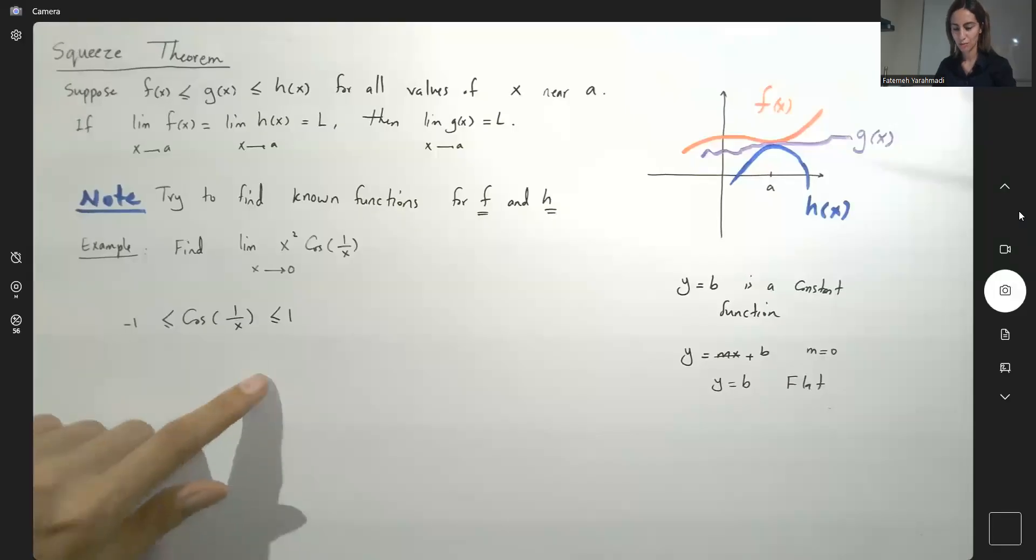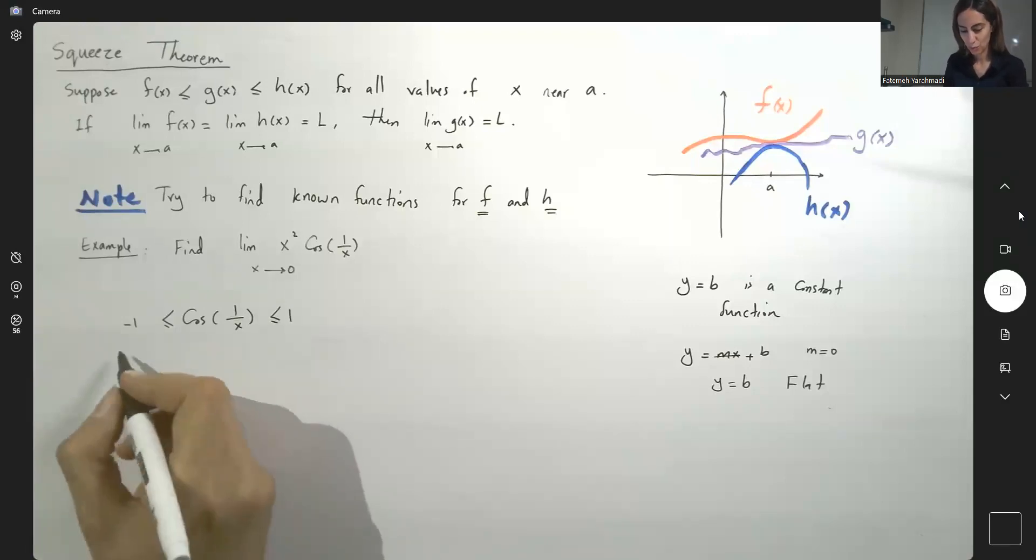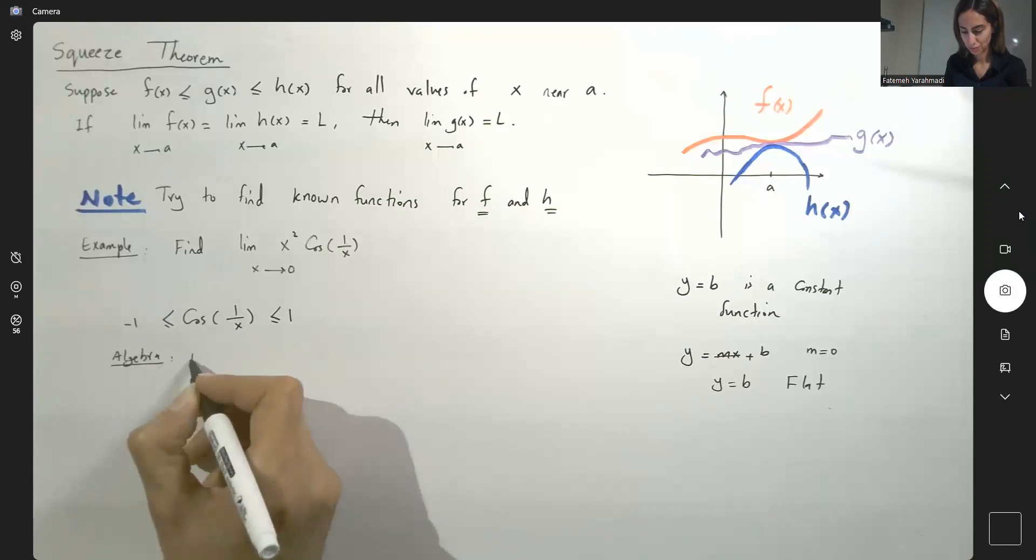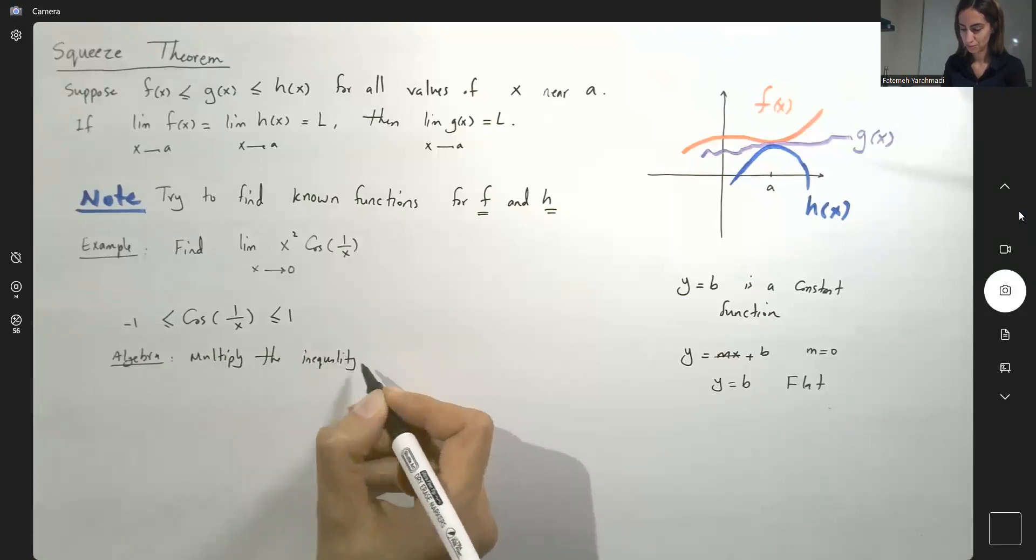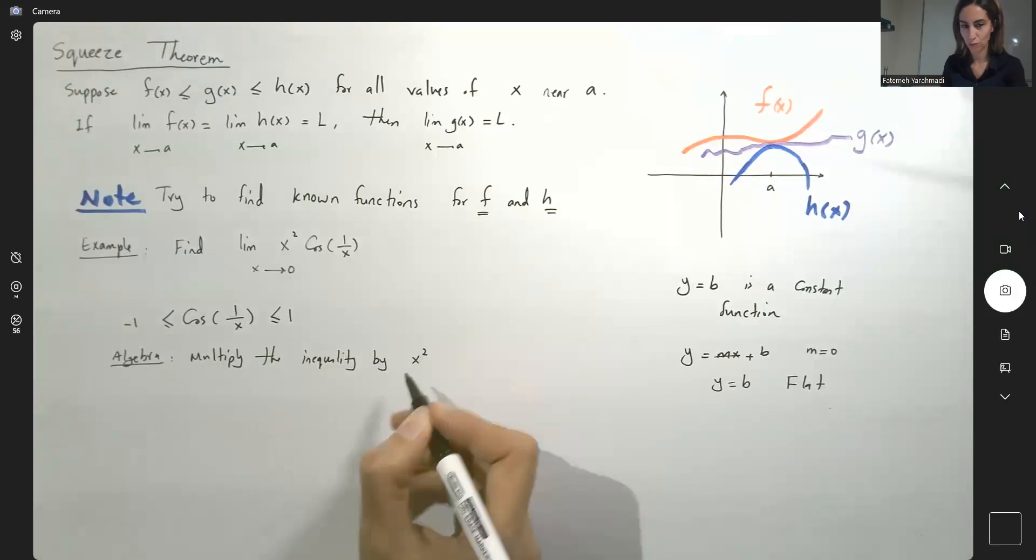Now what are we going to do? We're going to multiply everything by x squared. Do a little bit of algebra. Multiply the inequality by x squared.